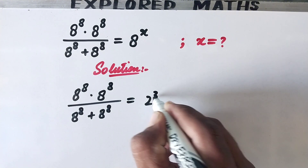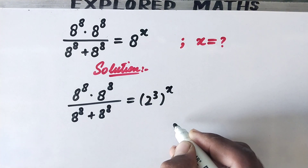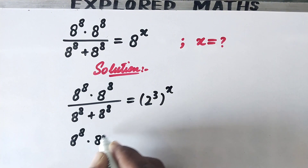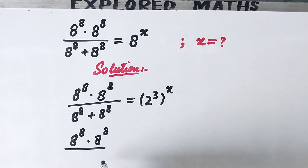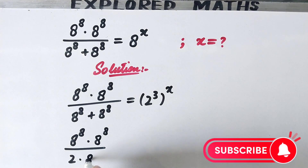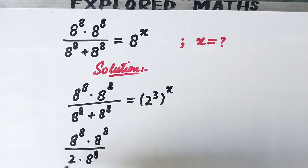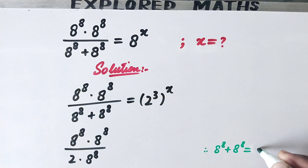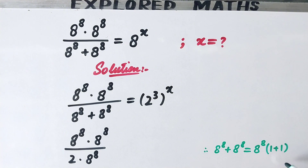This 8 is same as 2 cubed, raised to power x. Now we will write 8 to power 8 times 8 to power 8 divided by this denominator, which is the same as 2 times 8 to power 8. We solve the denominator: 8 to power 8 plus 8 to power 8 — since the same value is repeating, we take it out as a common factor, leaving 1 plus 1, giving 8 to power 8 times 2.